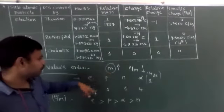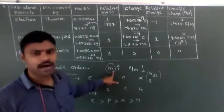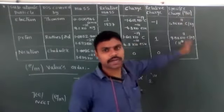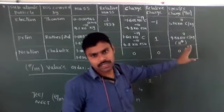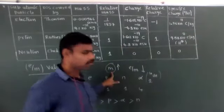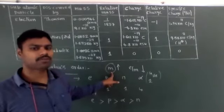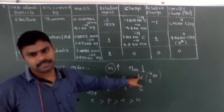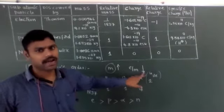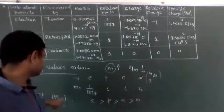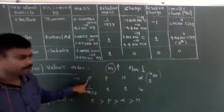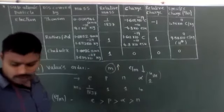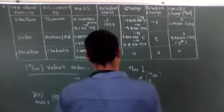Specific charge values depend on mass. Just remember: which particle has more mass, its E/M value will be less. Among electrons, protons, neutrons and alpha particles - electrons have very small mass. Next is protons, then neutrons, then alpha particles, because alpha particles have 4 units of mass.